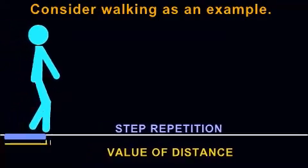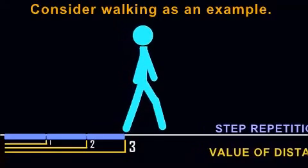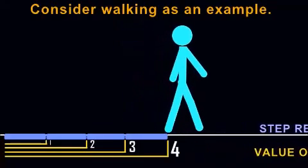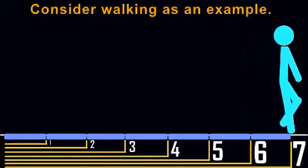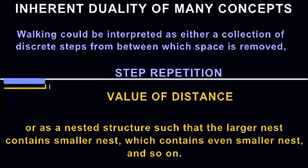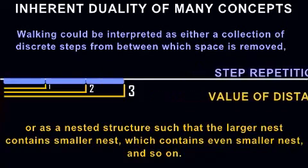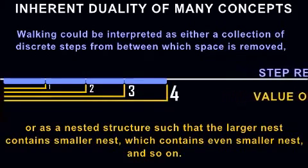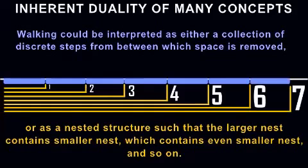Consider walking as an example. The act of walking could be interpreted as either a collection of discrete steps from between which space is removed, or as a nested structure such that the larger nest contains smaller nest, which contains even smaller nest, and so on.